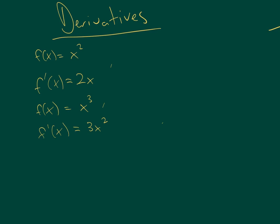So from this we can intuit a kind of pattern. One more. Suppose f of x equals x to the fourth. Then f prime of x would equal 4x cubed. So you can see that we're always taking the exponent, placing it in front, and lowering the exponent by 1.